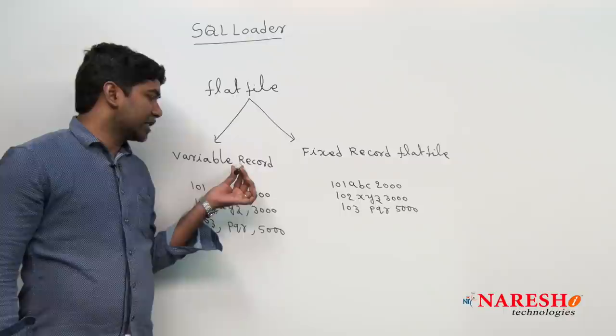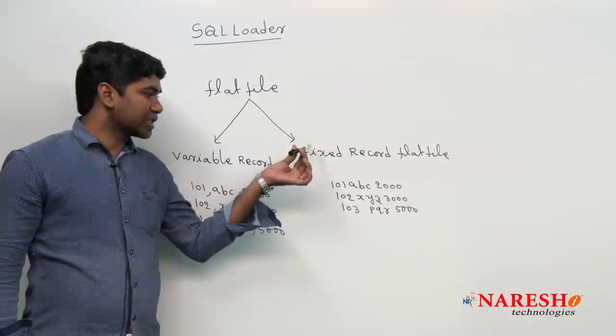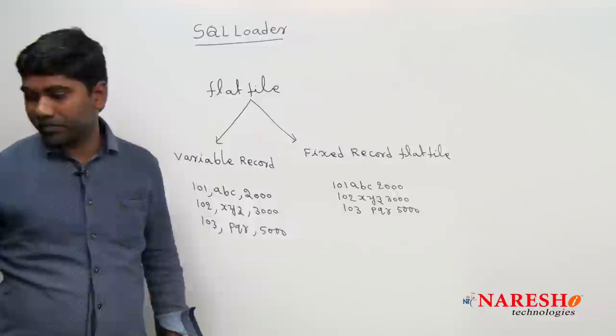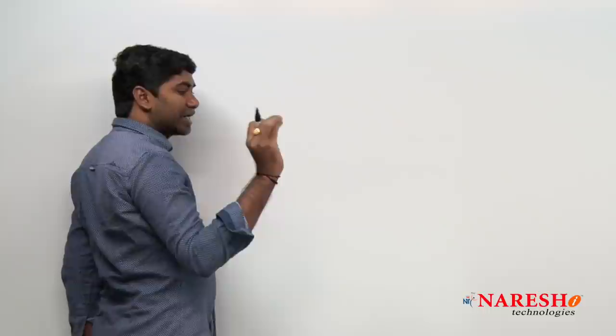Whenever any type of flat file — either Variable Record or Fixed Record — is given, we transfer the data from that flat file into Oracle Database using SQL Loader tool. SQL Loader does not directly transfer data into Oracle Database. SQL Loader always executes a control file. This file has a .ctl extension. We create that file first, then submit it.